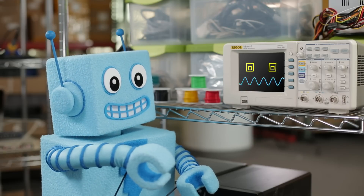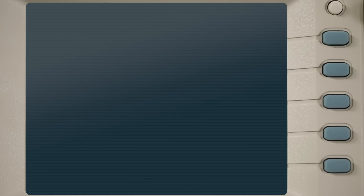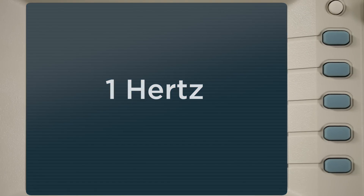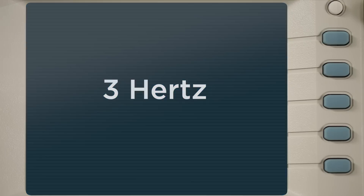Okay. Watch this. Right now, my screen is flashing once per second, so we can say it is flashing at a frequency of 1 hertz. Now, my screen is flashing a bit faster — 3 times per second — which is a frequency of 3 hertz.